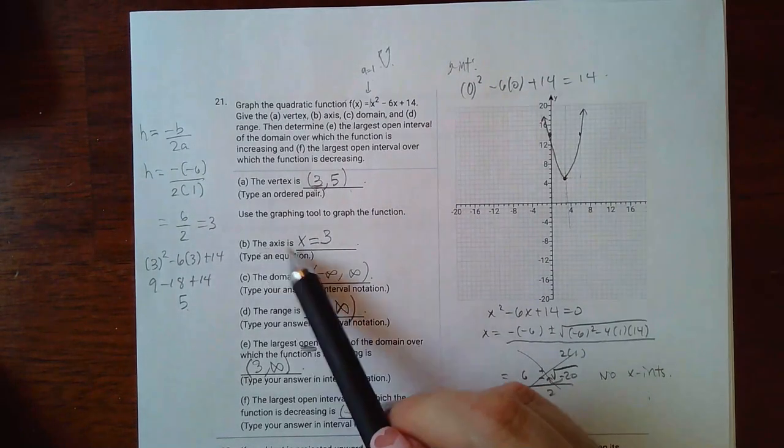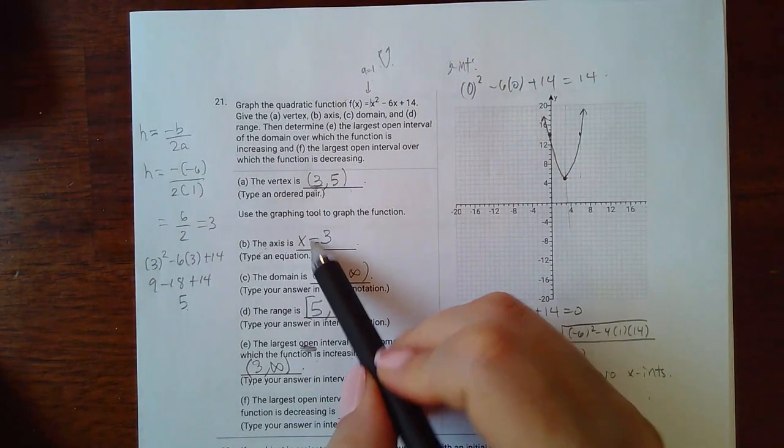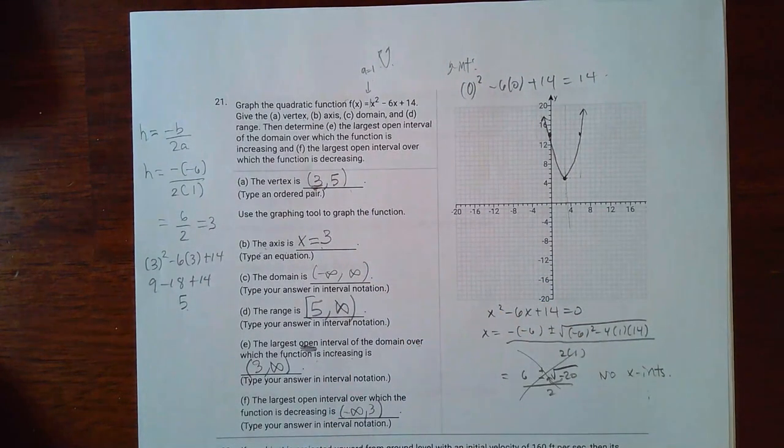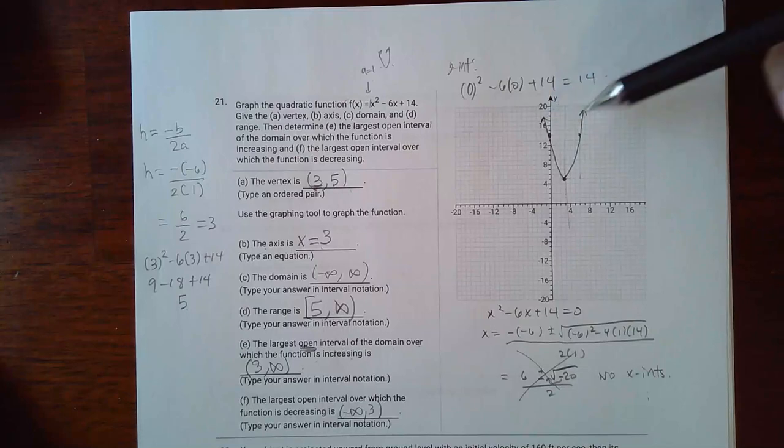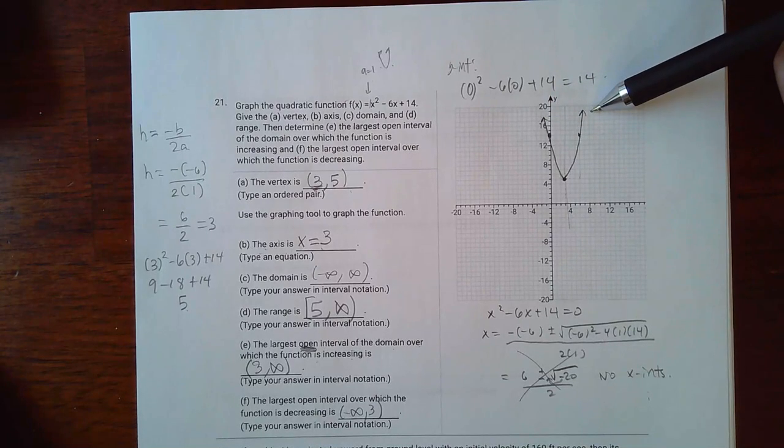Now the axis is always going to be x equals whatever this x coordinate is. So in my case x equals 3. The domain is negative infinity because this goes to the left to positive infinity since this goes to the right forever.